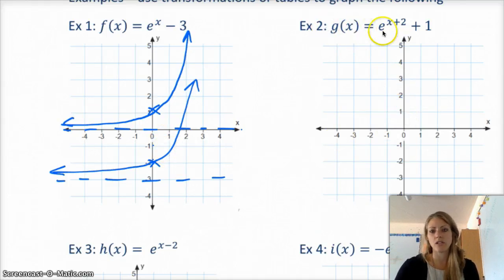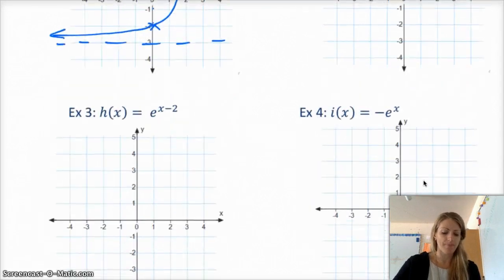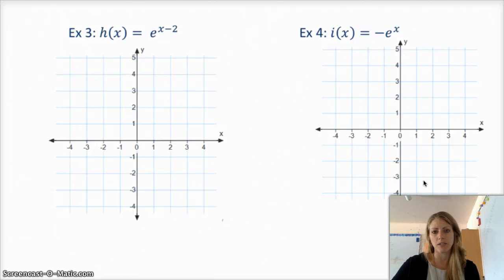You can try the next two. G of x is e to the x plus 2 plus 1. H is e to the x minus 2, where the minus 2 is in the exponent, and the other one's negative e to the x. So, go ahead, try to describe the transformation, and graph it. Just kind of, you know, same transformation stuff we've been doing since day 1.